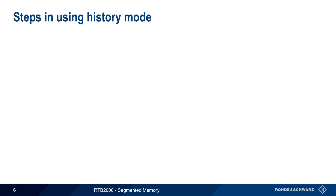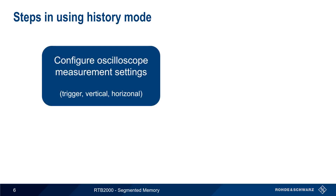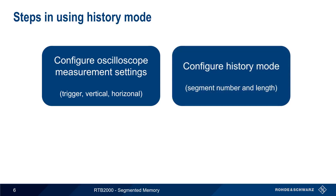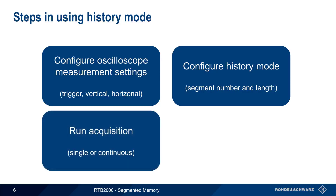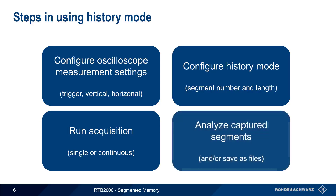On the RTB2000, segmented memory configuration and analysis are called history mode, and there are four main steps in using history mode and segmented memory. First, we need appropriate measurement settings for the trigger, vertical, and horizontal systems, which are usually the same as the settings you would use if operating with non-segmented memory. Second, the history mode parameters have to be specified: the number of segments to capture and the length of each segment. Next, we run an acquisition, which can be made in either a single shot or a continuous mode. After acquisition has been stopped, the captured segments can be viewed, analyzed, and/or saved as files.